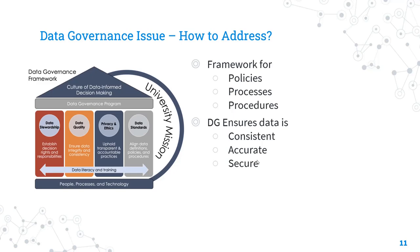Incomplete data governance can have serious consequences for an Informatica MDM project. To address this issue, it is necessary to establish a comprehensive data governance framework that includes policies, procedures, and processes. This framework should include clear data stewardship roles and responsibilities, data access policies and procedures, and data security policies and procedures. By doing this, organizations can ensure that their Informatica MDM system is effective and reliable. These are the common issues normally noticed in Informatica MDM implementation — this is the first part.